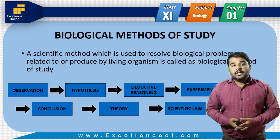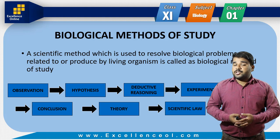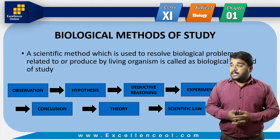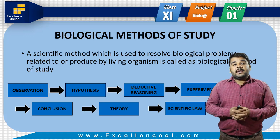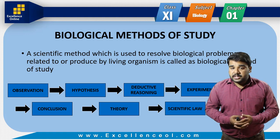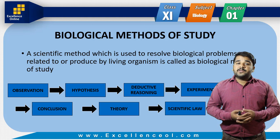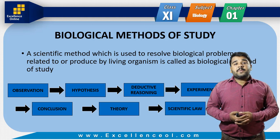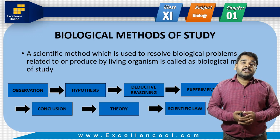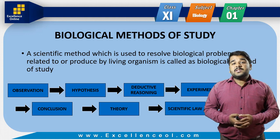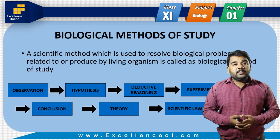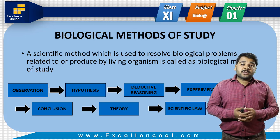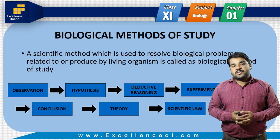Experiments were performed and it was observed that a normal person and a malaria patient showed differences in their blood. Scientists concluded that malaria is caused by a mosquito. The theory and scientific law were established: malaria is caused by a parasite — plasmodium — which is carried by the female Anopheles mosquito as its vector.